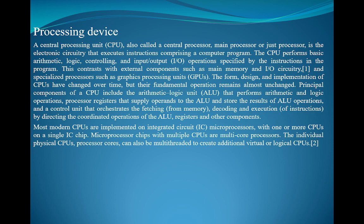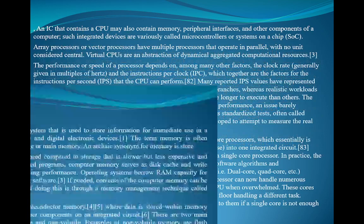The form, design, and implementation of CPUs have changed over time, but their fundamental operations remain almost unchanged. The principal components of a CPU include: the arithmetic logic unit (ALU), which performs arithmetic and logic operations; processor registers, which supply operands to the ALU and store the results of ALU operations; and a control unit, which orchestrates the fetching, decoding, and execution by directing the coordinated operation of the ALU. Most modern CPUs are implemented on integrated circuit microprocessors, with one or more CPUs on a single IC chip. Microprocessor chips with multiple CPUs are called multi-core processors. Individual physical CPUs can also be multi-threaded to create additional virtual or logical CPUs.